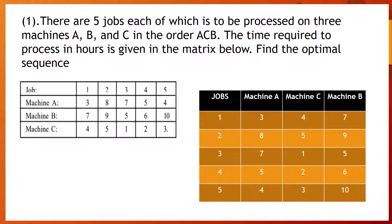This is the problem which we are solving in this video. There are 5 jobs, each of which is to be processed on 3 machines A, B, C in the order A, C, B. This is the main point you have to note because in the example, as soon as you see the table with A, B, C, make sure you find out this part because they will give the order in which the machines have to be processed. Here in this problem, it is A, C and then B. The time required to process is given in the matrix below. Now we need to find the optimal sequence.